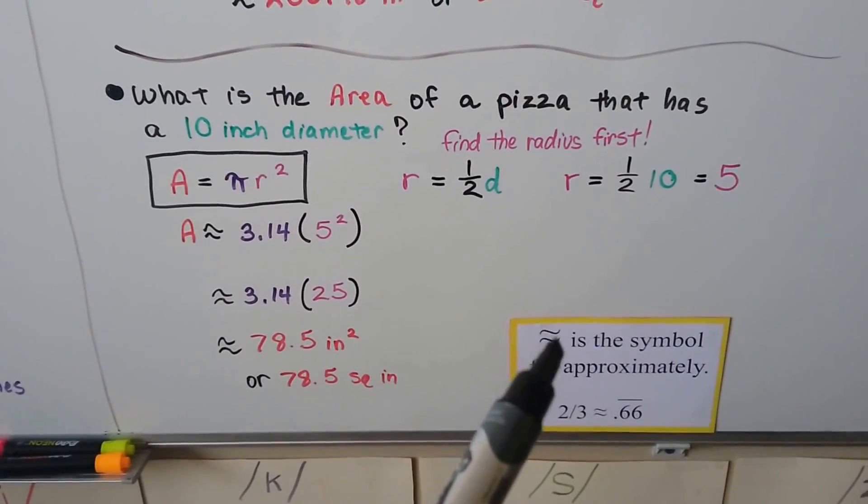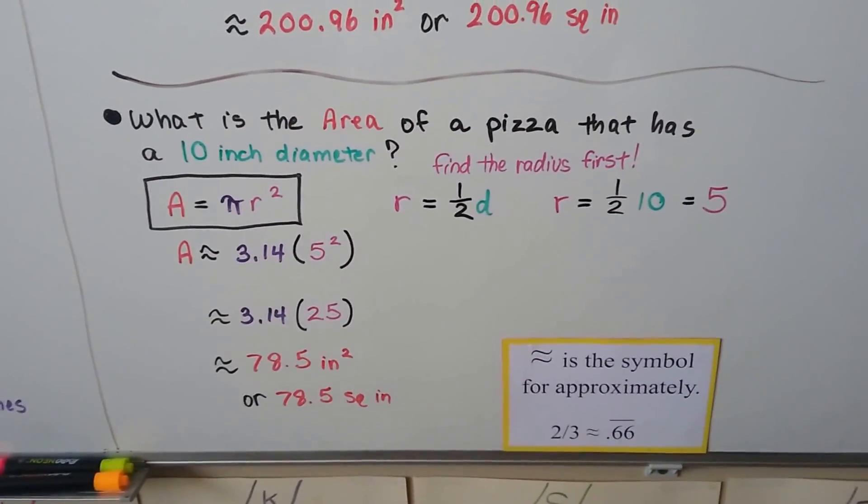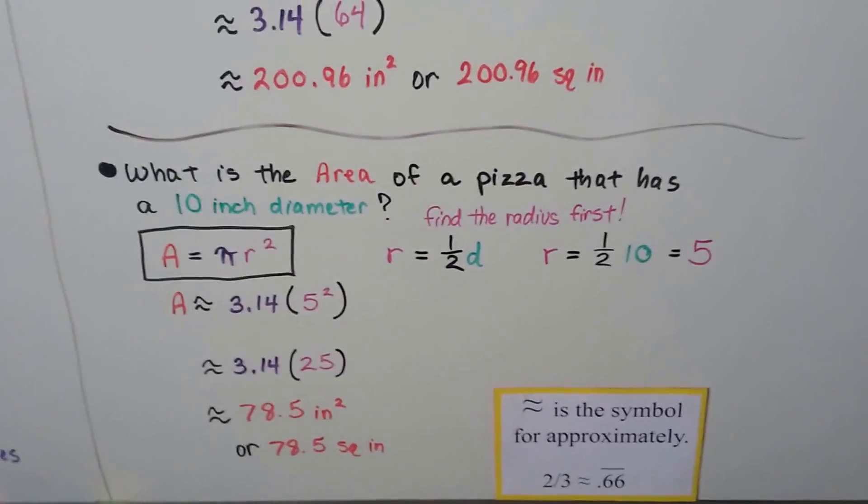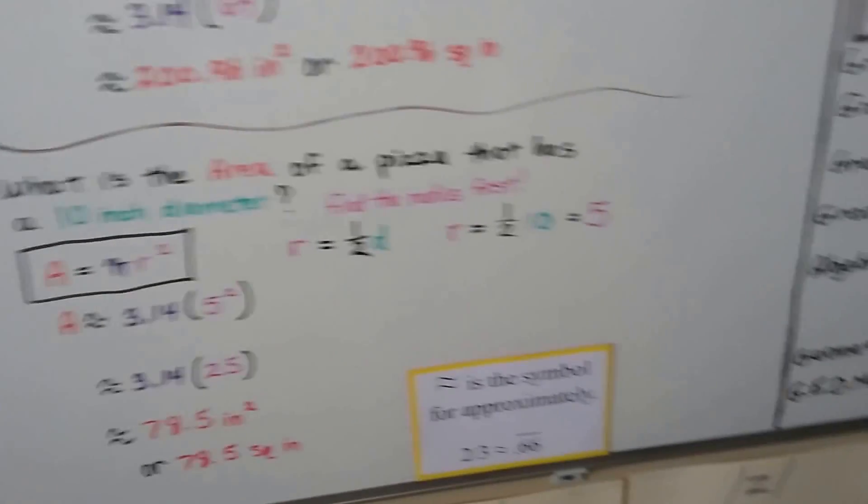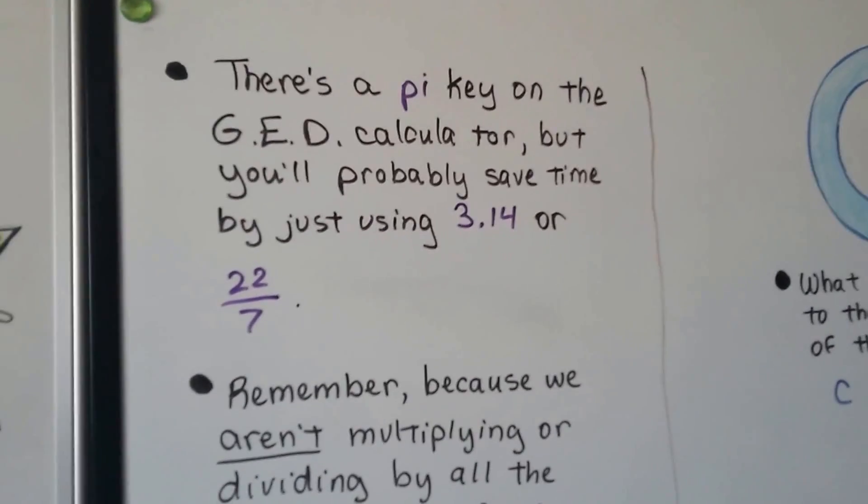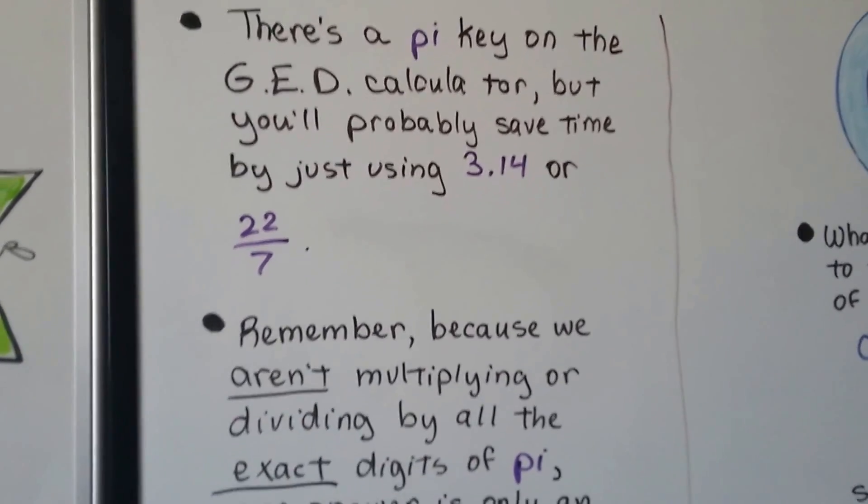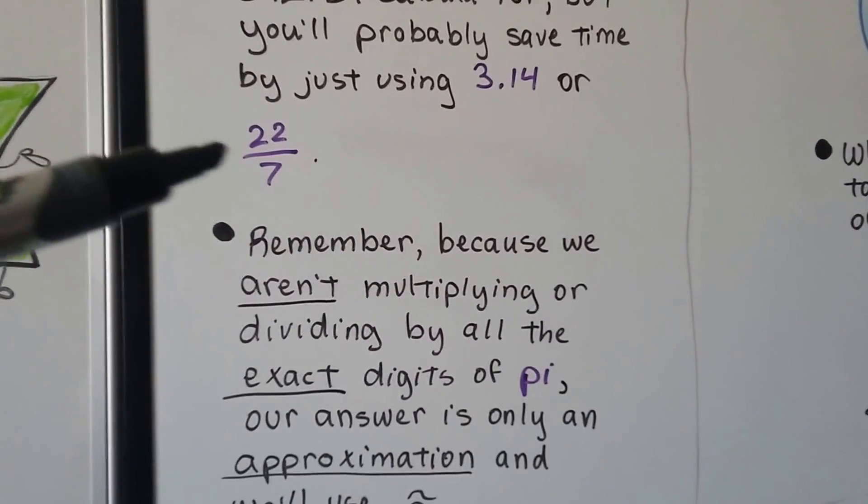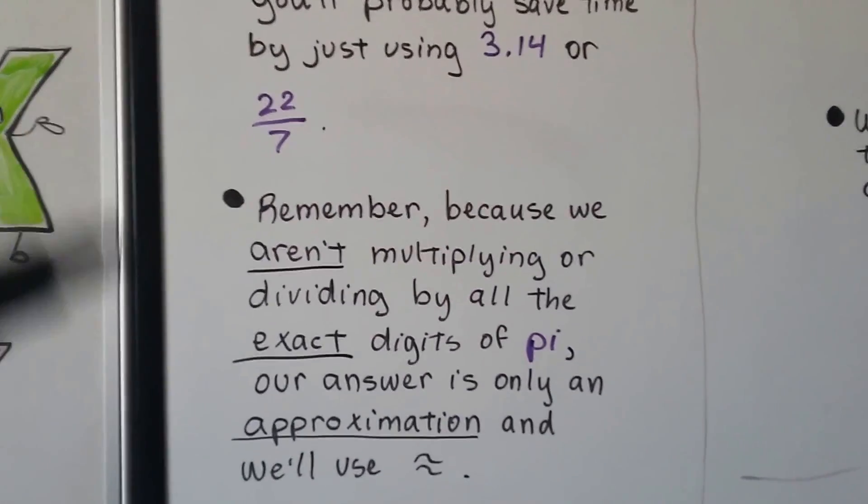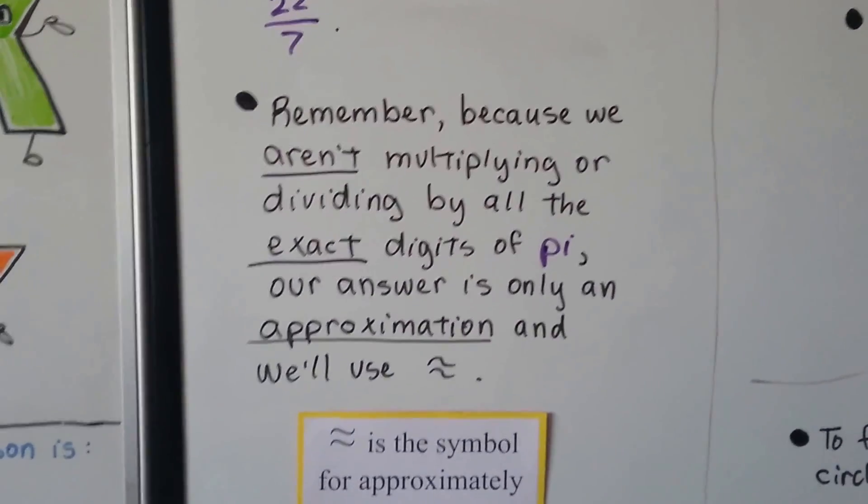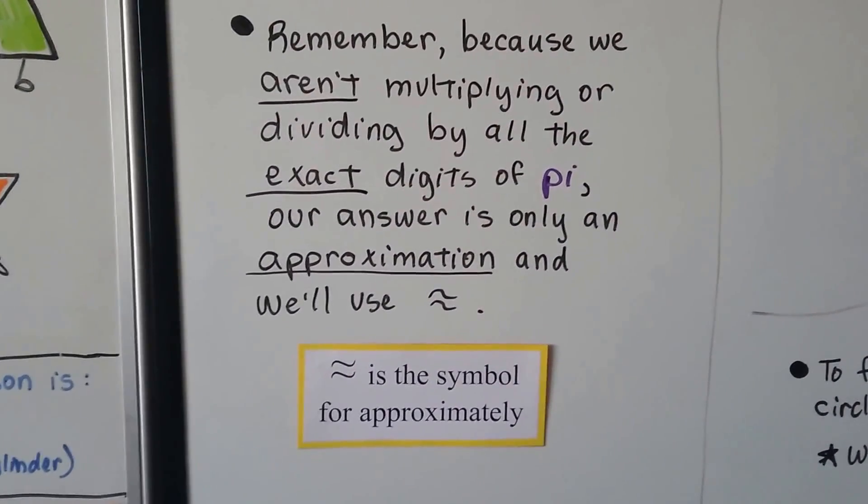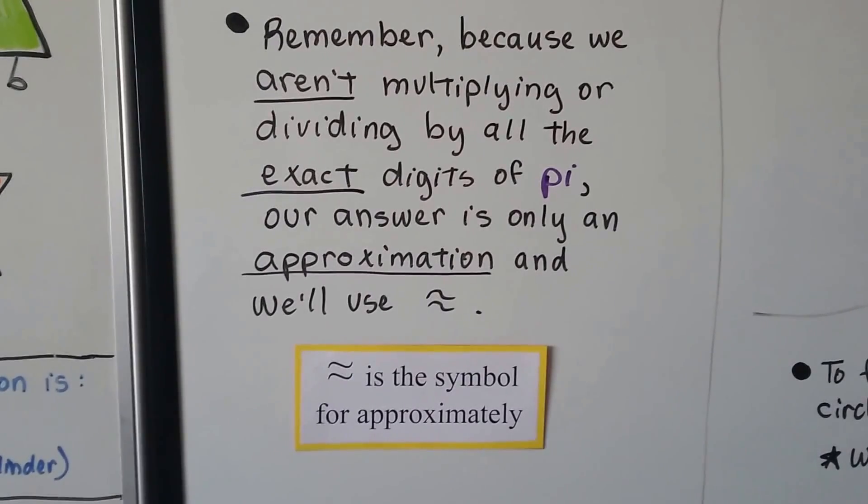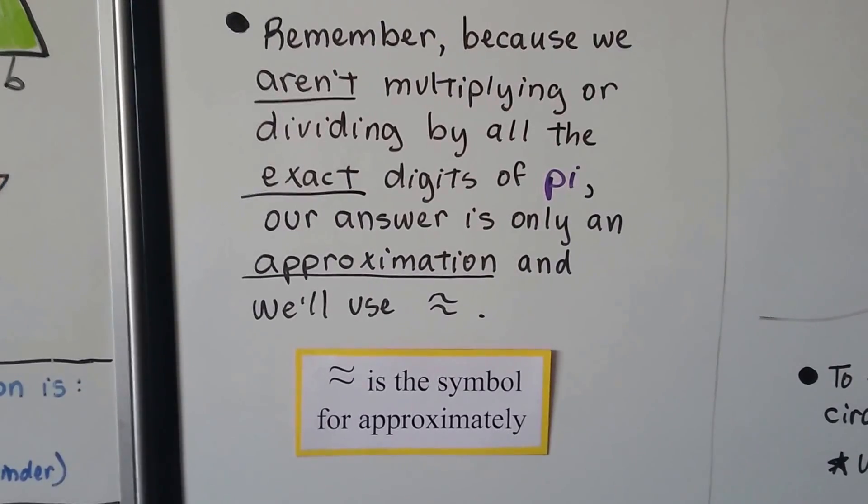Just remember that the double wavy line, that wavy equal sign, means approximately, because we cannot find the exact answer with pi. And there is a pi key on the GED calculator, but you'll probably save time by just using 3.14 as a decimal, or 22 sevenths. Just remember, because we aren't multiplying or dividing by all the exact digits of pi, our answer is only an approximation, and we'll use the approximate symbol.